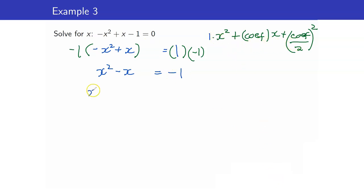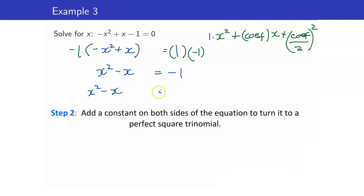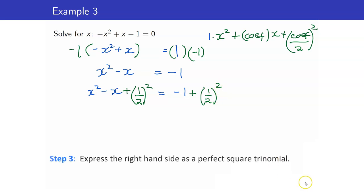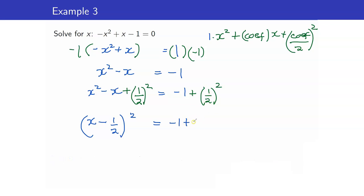Now we have the proper form and I am ready to add my constant. Remember that the constant is always added as a positive. Get the coefficient of x, which is 1, divided by 2 and then squared. Add the same to the right side. This gives us x minus 1 half, squared, on the left. The right side is negative 1 plus the square of 1 half, which is 1 fourth. So we have x minus 1 half squared equals negative 3 fourths.